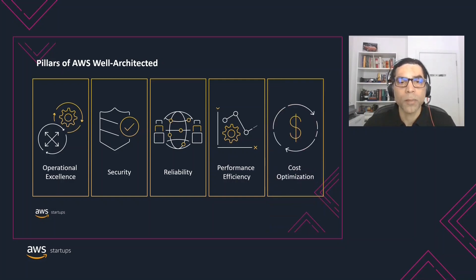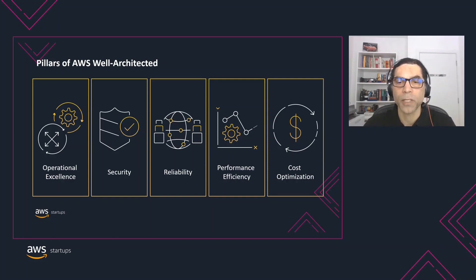The Cost Optimization Pillar focuses on avoiding unnecessary costs. Key topics include understanding and controlling where money is being spent, selecting the most appropriate and right number of resource types, analyzing spend over time, and scaling to meet business needs without overspending.